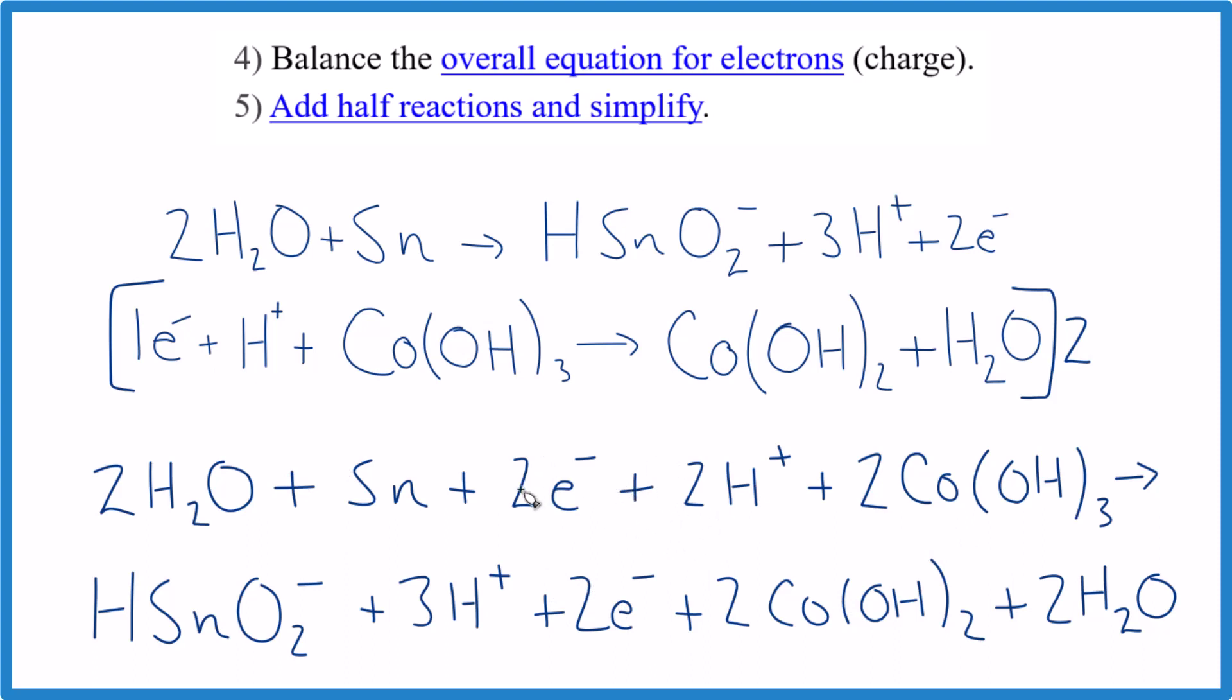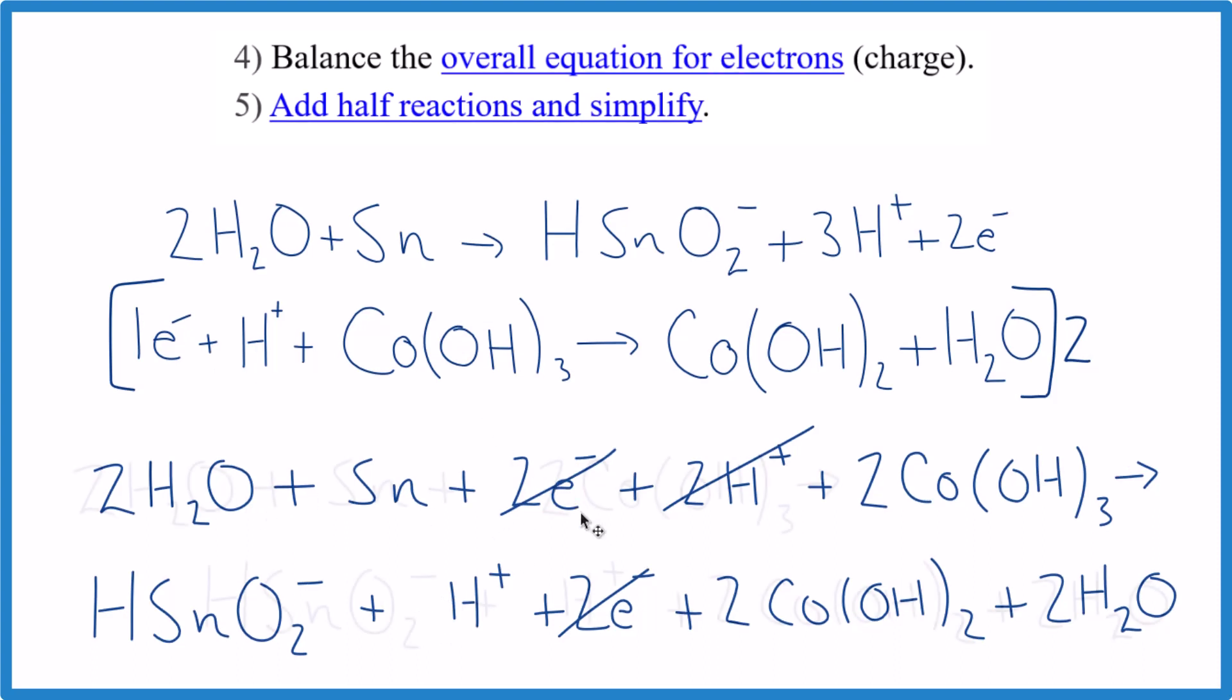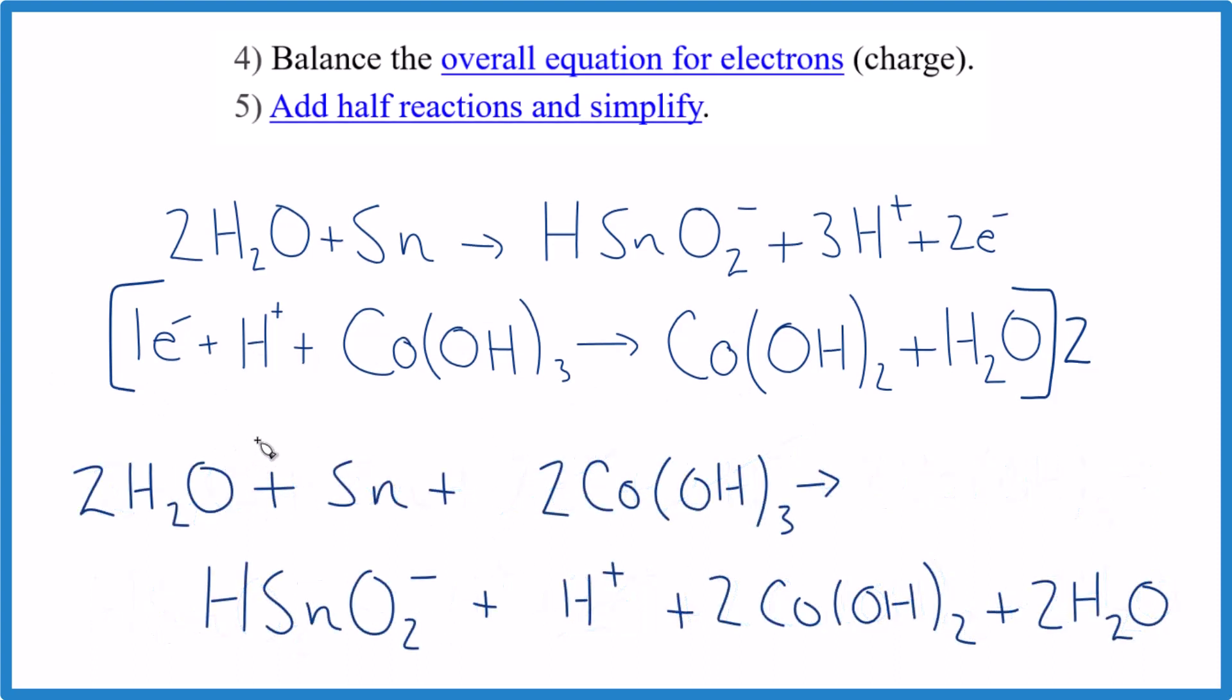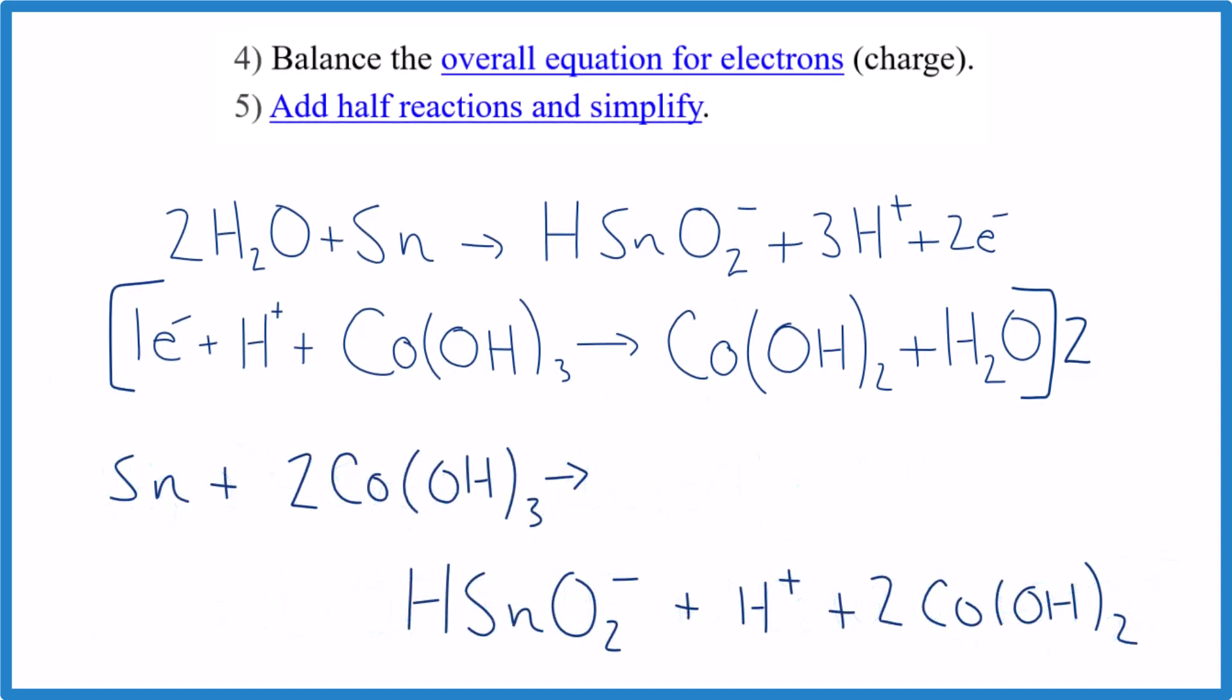Two electrons—get rid of those, they're the same on both sides. Here I have two H+, here I have three, so let's get rid of this three minus two, just one left. Get rid of these. I see we also have two waters on each side—get rid of that. This is the balanced redox reaction for cobalt(III) hydroxide plus tin in acidic solution.